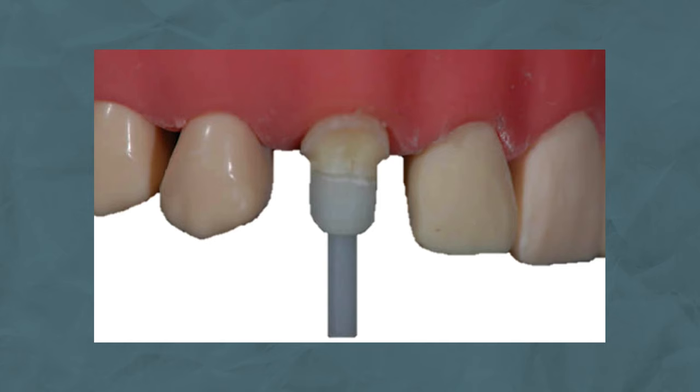You would use a cast post if you wanted it to be customised to the shape of the canal — beneficial when you have a really large canal and want to limit dentine removal. With a prefabricated post, you need to prepare the dentine in the canal to match the shape of the post, which can be really destructive especially in larger canals. The disadvantage of a cast post is that you'll need a temporary post while the lab fabricates the custom one, and your temporary post can't provide the same hermetic coronal seal that a prefabricated post and core can.